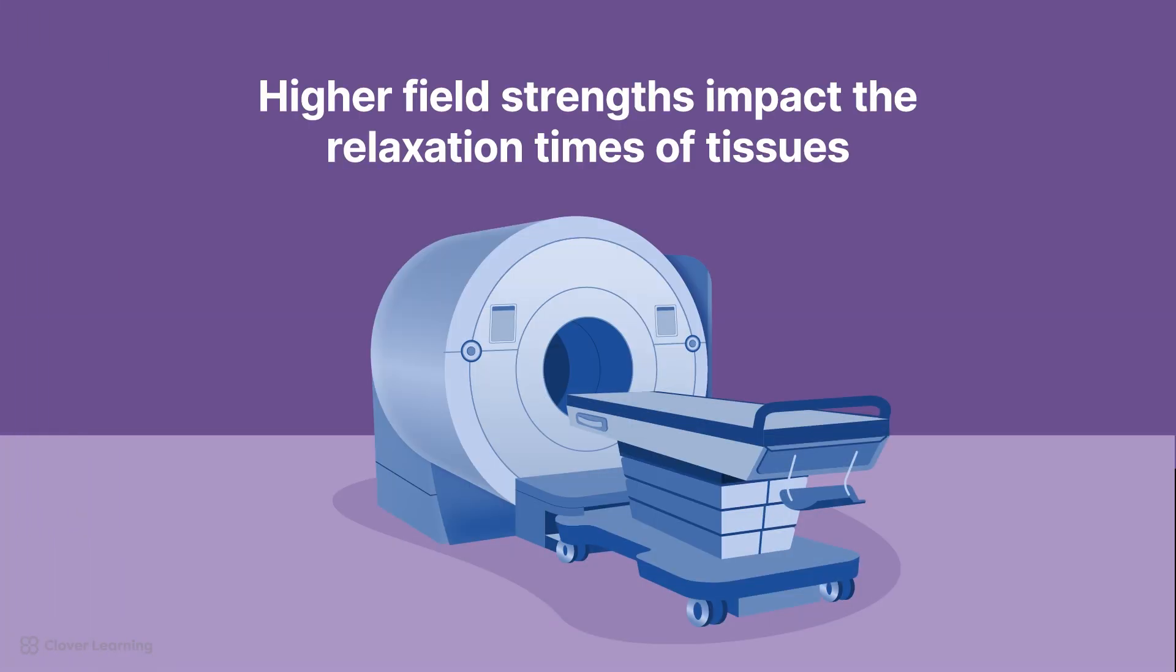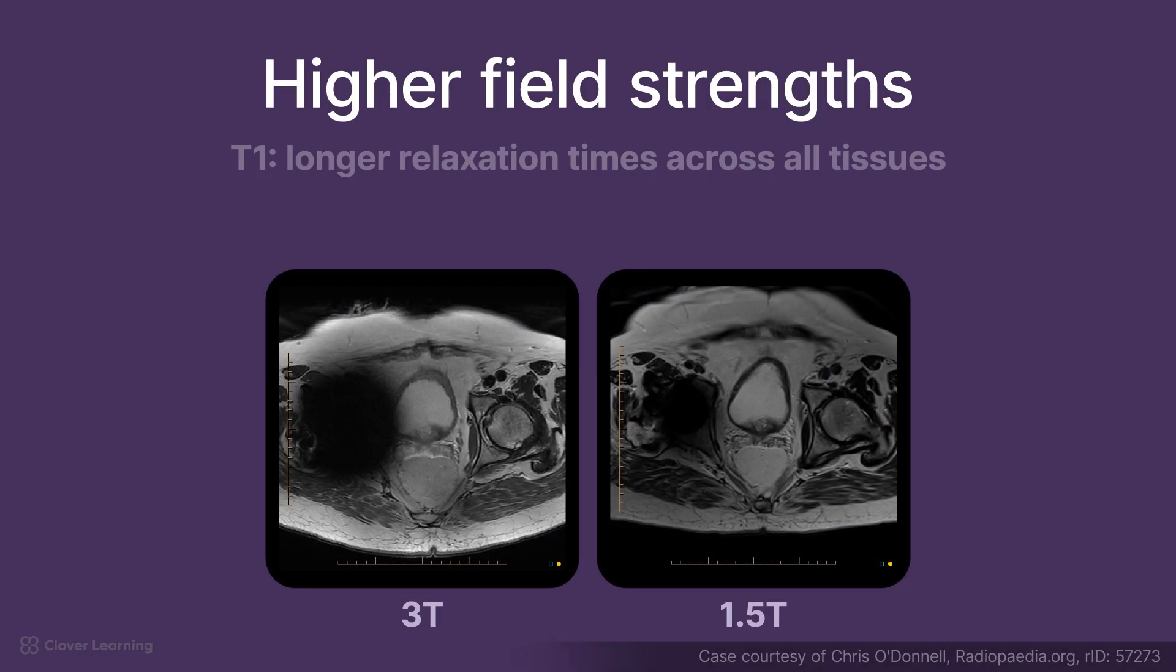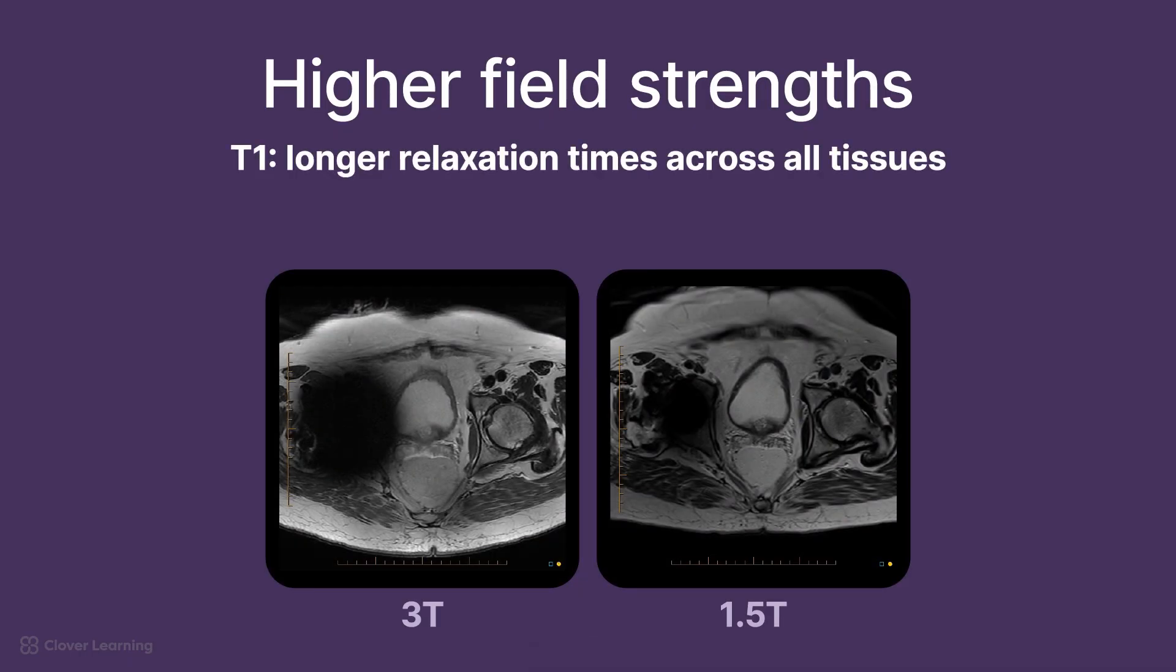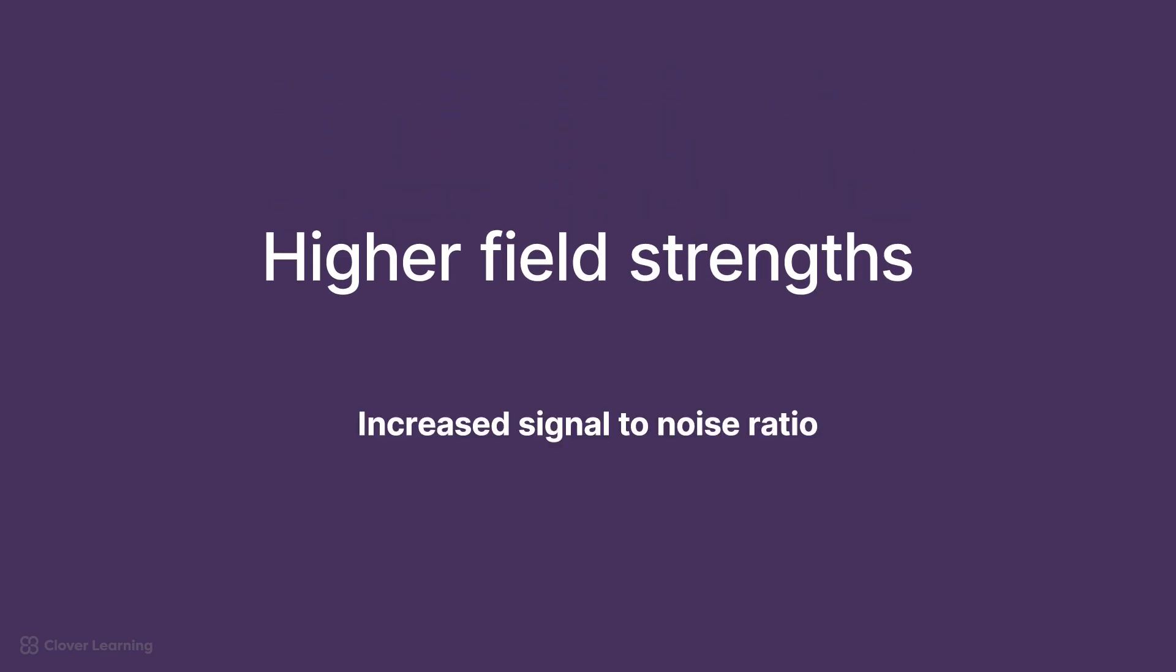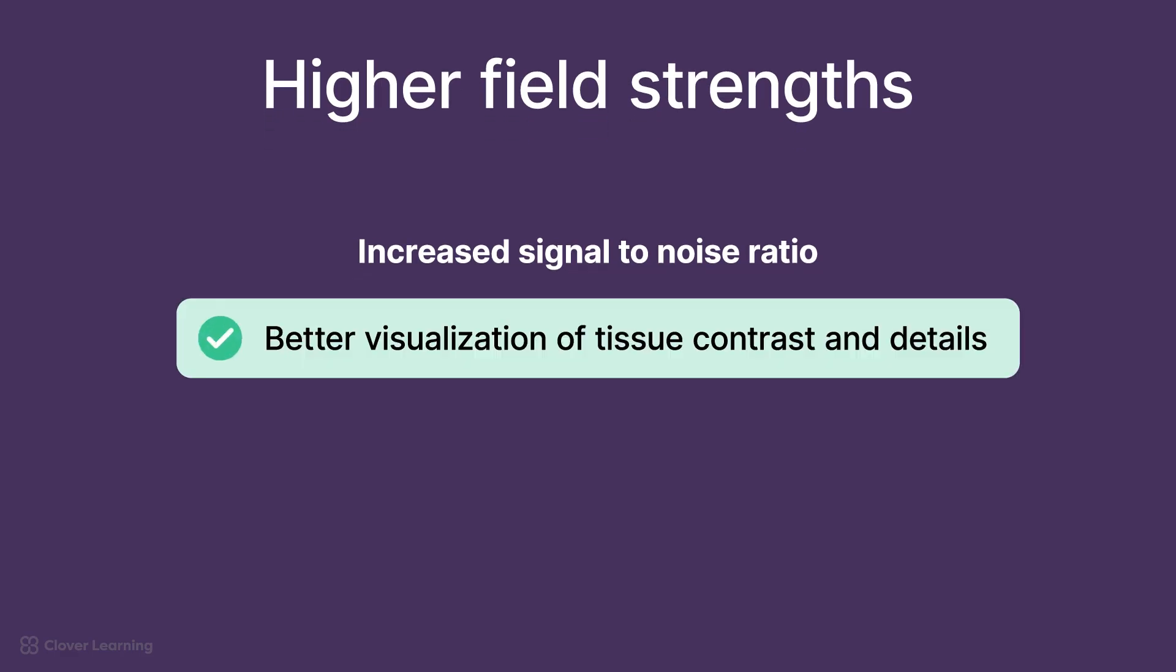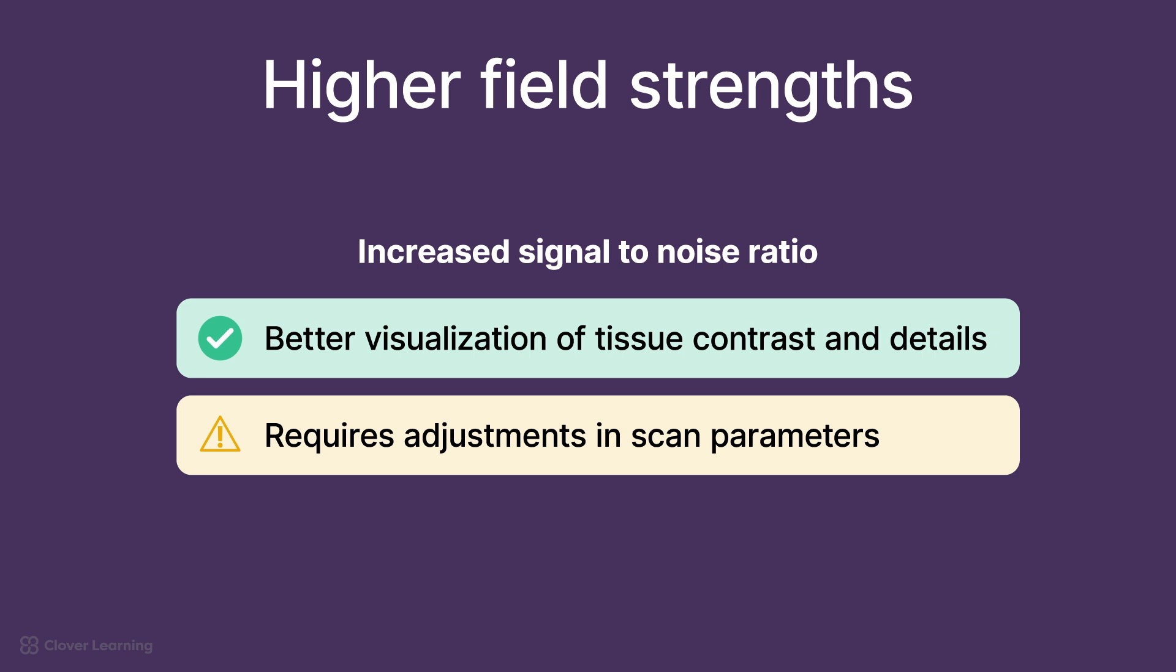The advent of higher field strength MRI systems, for example, three Tesla scanners, has significantly enhanced image quality and resolution. However, these advancements also impact the relaxation times of tissues. Generally, higher field strengths result in longer T1 relaxation times across all tissues. But the effects on T2 times are more complex and require adjustments to be made to compensate. The increased signal-to-noise ratio at higher field strengths allows for better visualization of tissue contrasts and finer details, but it also requires adjustments in scan parameters to optimize image quality.